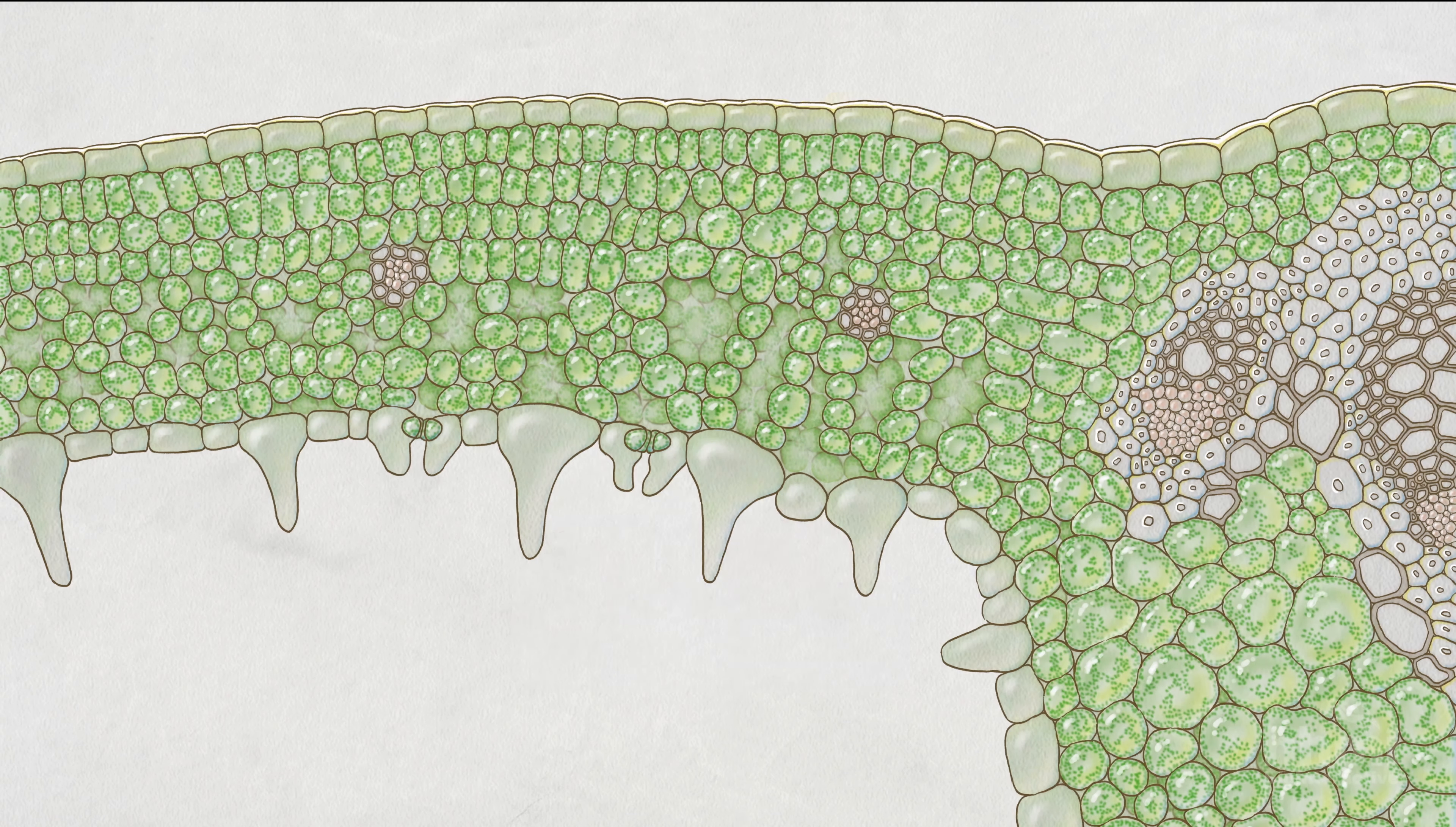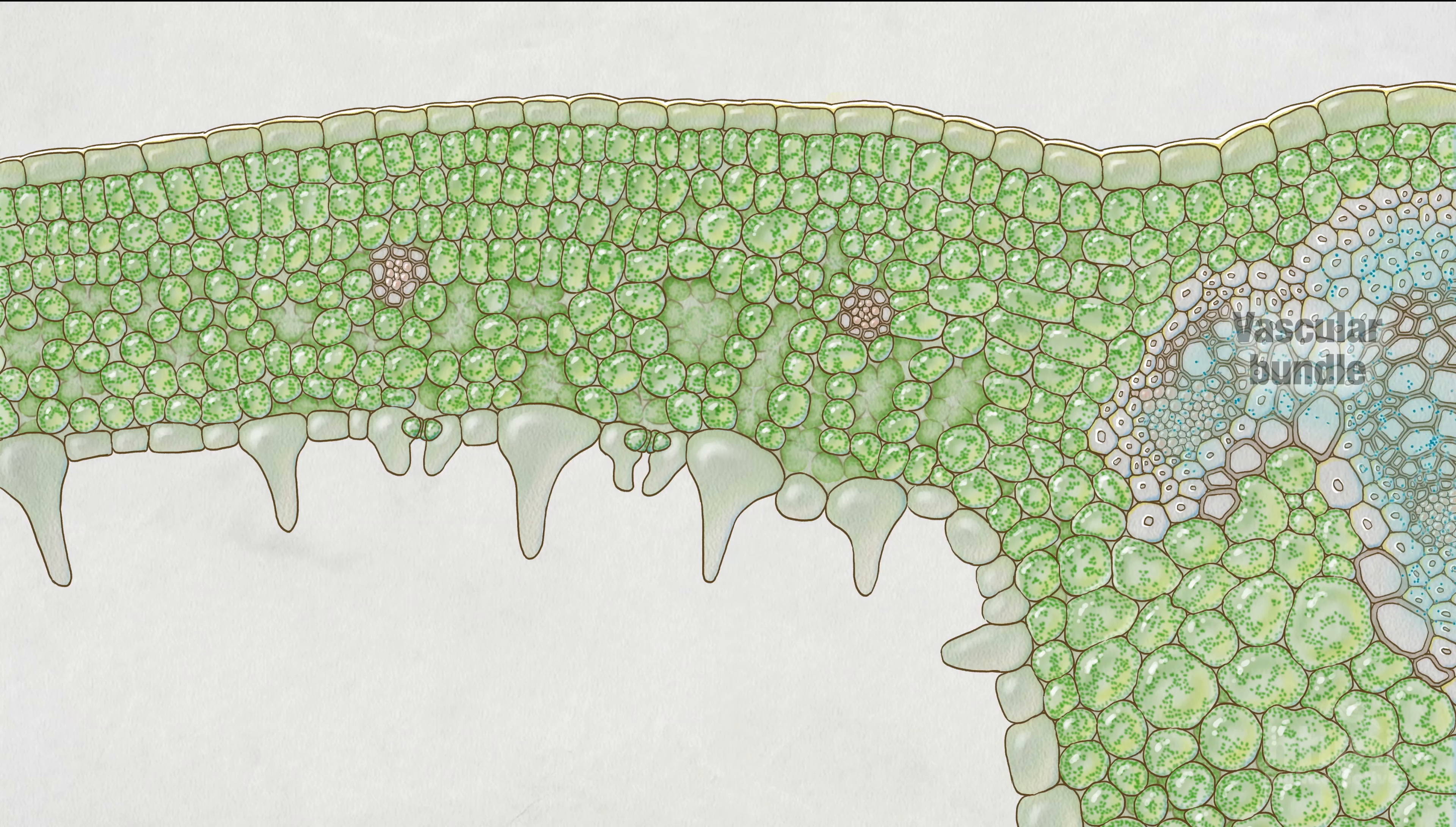Sucrose, produced by leaf cells, is transported through the vascular bundles to other parts of the plant, like stems and roots.